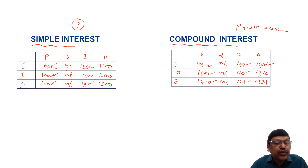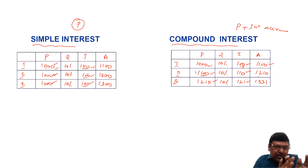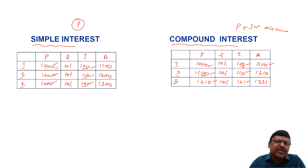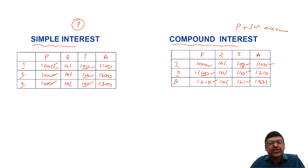In simple interest, the principal remains the same, so interest for any one year is the same — if it is 100 for one year, it is 200 for two years. In compound interest, you cannot say that, because the principal is increasing. This is the basic concept of simple interest and compound interest, and using these two methods you can solve any related question.